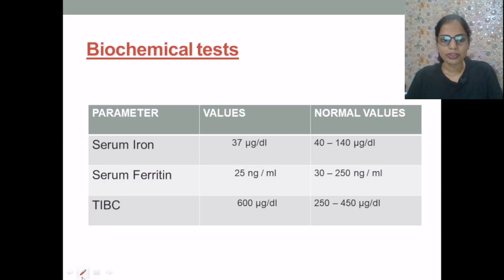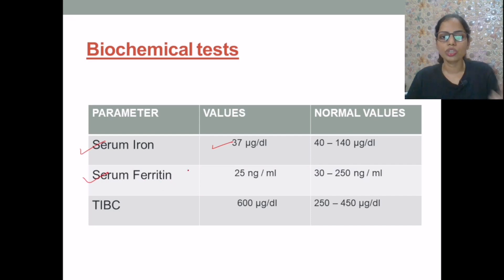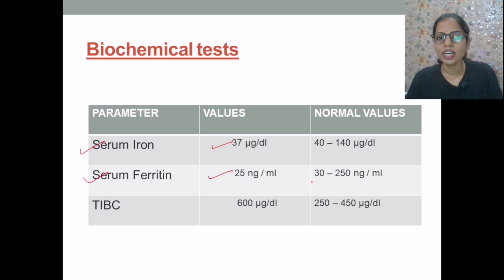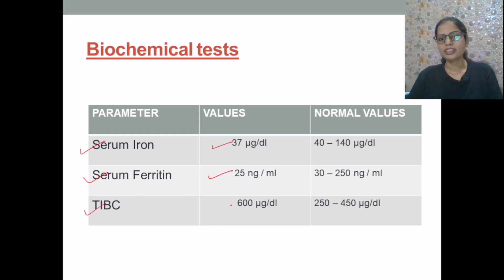Here are the biochemical tests of great importance. The serum iron level is 37 micrograms per deciliter, which is found to be decreased. Serum ferritin level, which is the storage form of iron, is 25 nanograms per ml, which is also found to be reduced. The TIBC, which is the total iron binding capacity, is found to be elevated at 600 micrograms per deciliter.